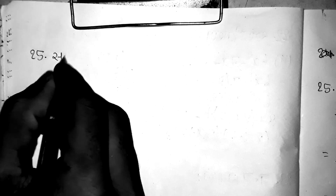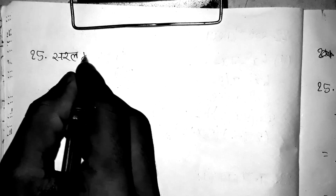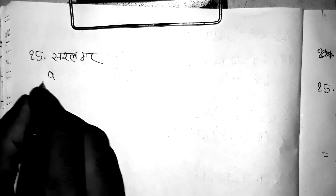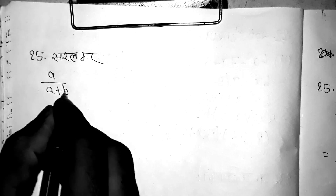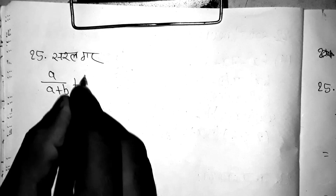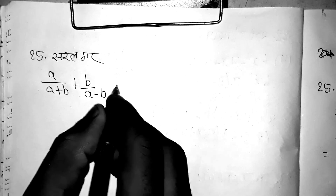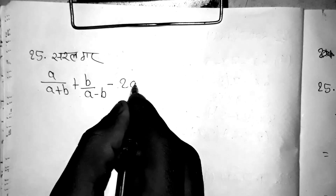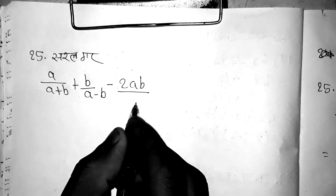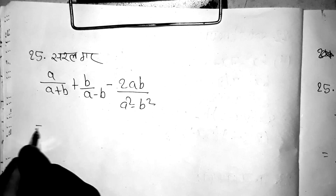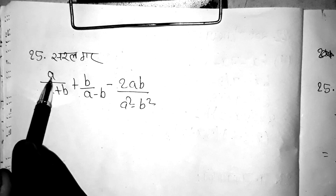This is the 25th question. The question is a by a plus b, plus b by a minus b, and minus 2ab by a square minus b square.